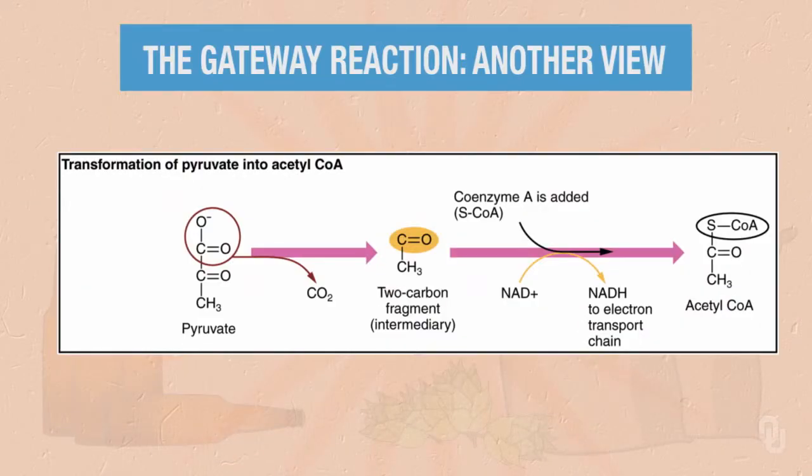We can take another view of this reaction with the help of this diagram. This explicitly shows the structure of pyruvate, which you all hopefully know by now, and it shows the loss of CO2. Once that happens, we have a two-carbon fragment. This two-carbon fragment is transferred to coenzyme A to make acetyl CoA, and in the process, our cofactor NAD+ is reduced to NADH. Now, the diagram says that this NADH can go to the electron transport chain, and so keep that in mind, because that's a topic we're definitely going to encounter.